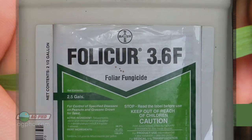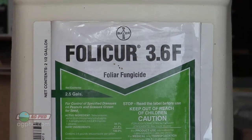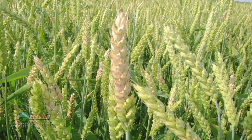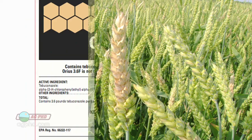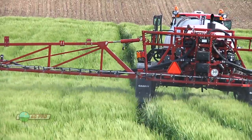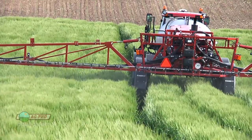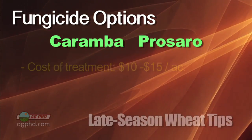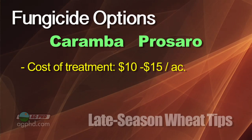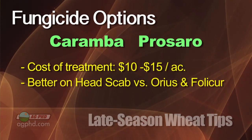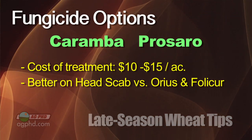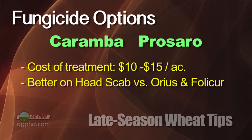We have some options for fungicide. Back a few years ago we only had one: Folicure, and it cost fifteen dollars an acre and wasn't that great on head scab. Now there's generic Folicure called Aureus that only costs two dollars an acre for the full rate — a great option if you don't want to invest a lot of money. However, the better options for head scab are Caramba and Presaro. They'll cost maybe ten, twelve, fifteen dollars an acre, but if they're better on head scab and you're in an area with that worry, it's probably worth the money.